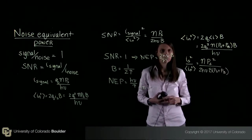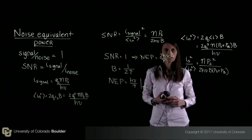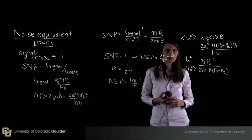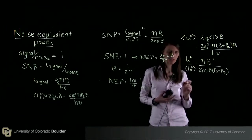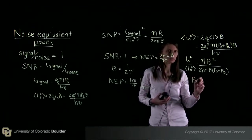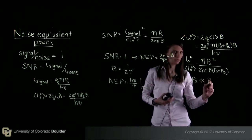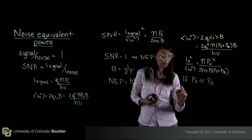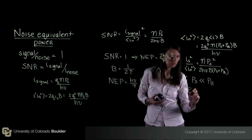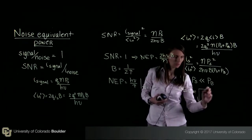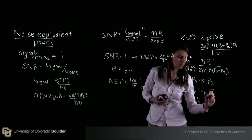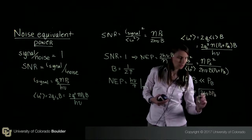So the noise equivalent power in the presence of a background radiation is the background limited NEP. And it can be determined by setting the signal to noise ratio to 1 and solving for the signal power. So let's assume that essentially P s, so my signal power, is much, much less than my background power. In this case, the noise equivalent power that's background limited NEP is going to be approximately equal to the square root of 2 H nu bandwidth P b over eta.